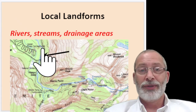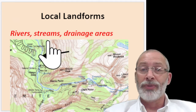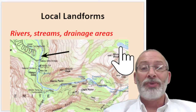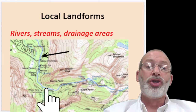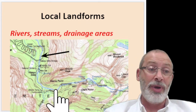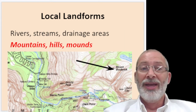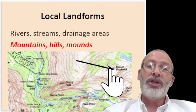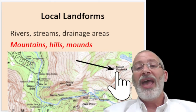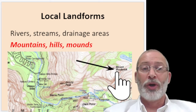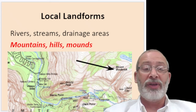Topographic maps are also colorized to show local landforms. Blue areas refer to rivers, streams, drainage areas, or swamps. Here are symbols for a swampy area, this would be a marsh, this is a river, and this stream drains into that river. The shape of contour lines can also show mountains, hills, and mounds — they form basically concentric circles — representing a peak or high point on a topographic map as opposed to a low point.